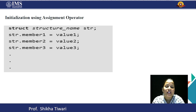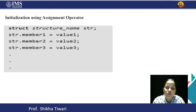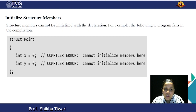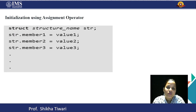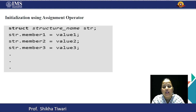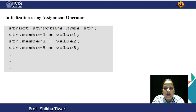The right way to initialize can be done using the assignment operator. Here, str is the variable, struct is the keyword, followed by the structure name — like employee or point from the previous slides. With the dot operator you access and initialize the member's value. So str.member1 = value1 is how you initialize the values.